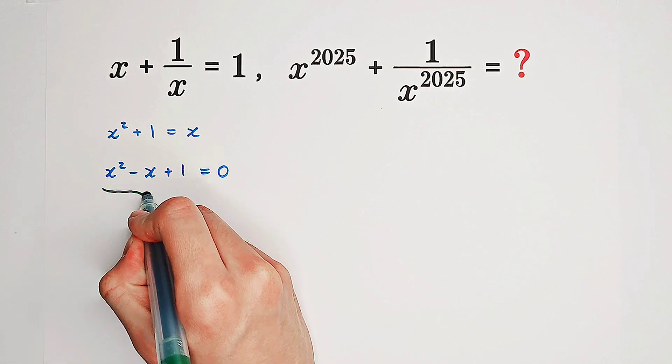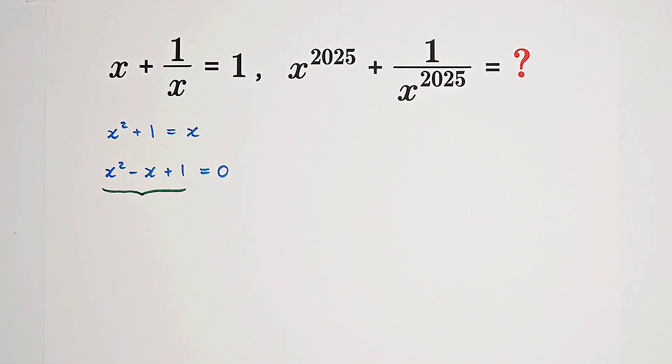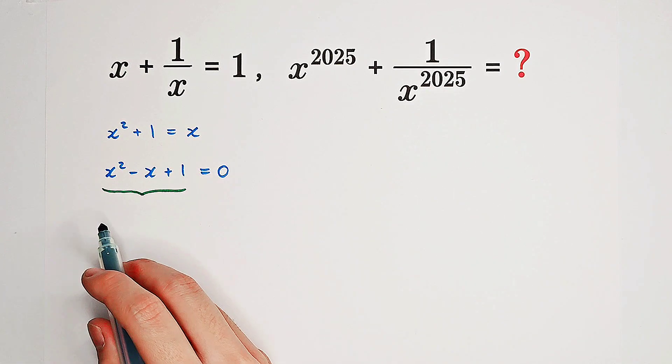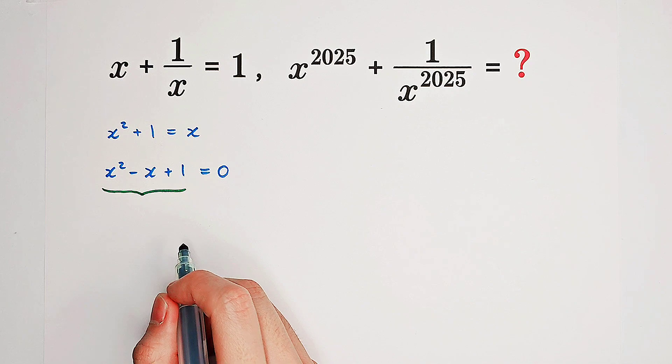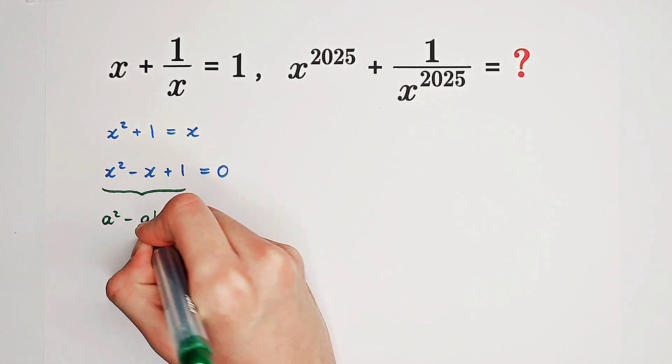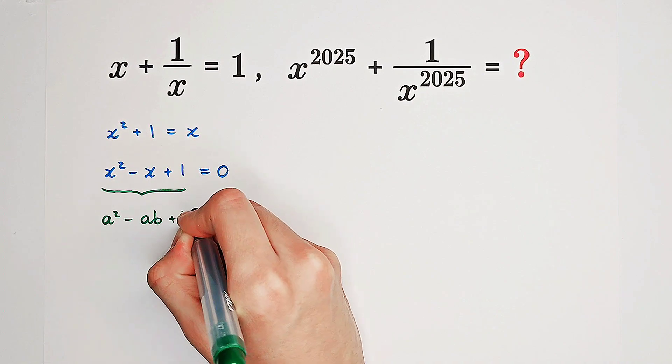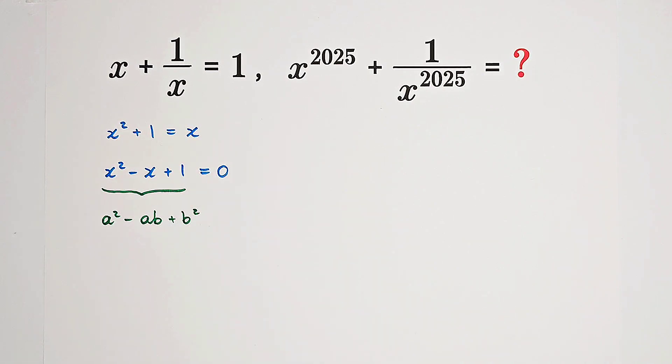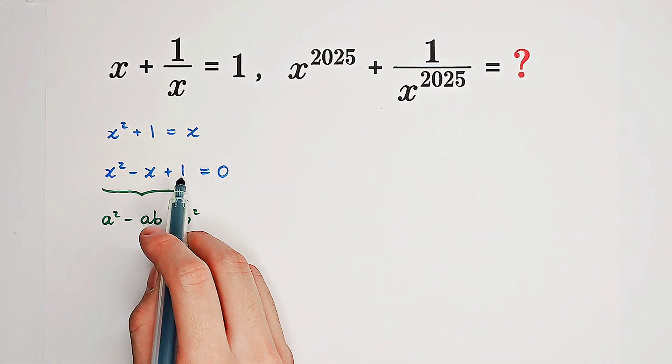Focus on the form of the left-hand side: x squared minus x plus 1. It actually has the form a squared minus a b plus b squared. Doesn't it? Where a is x, b is 1.